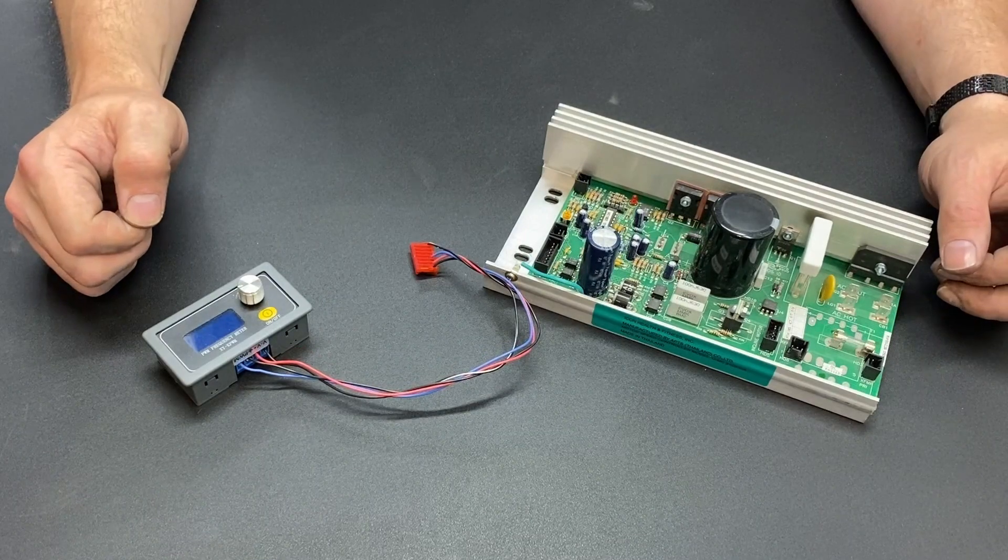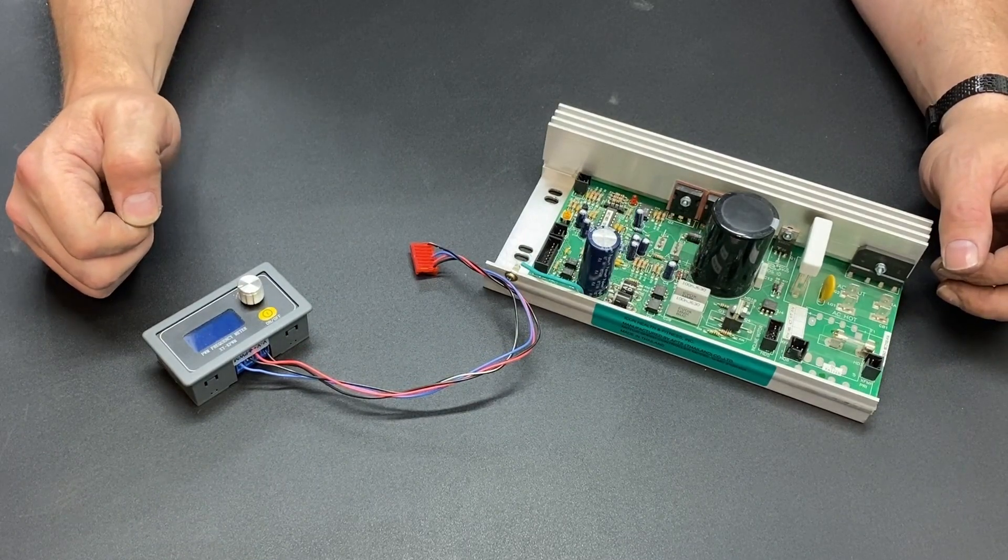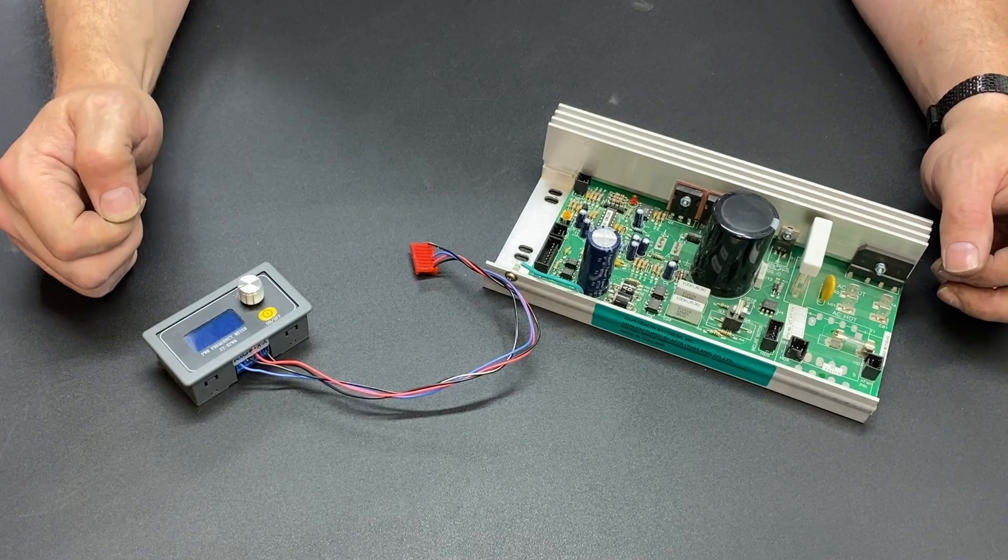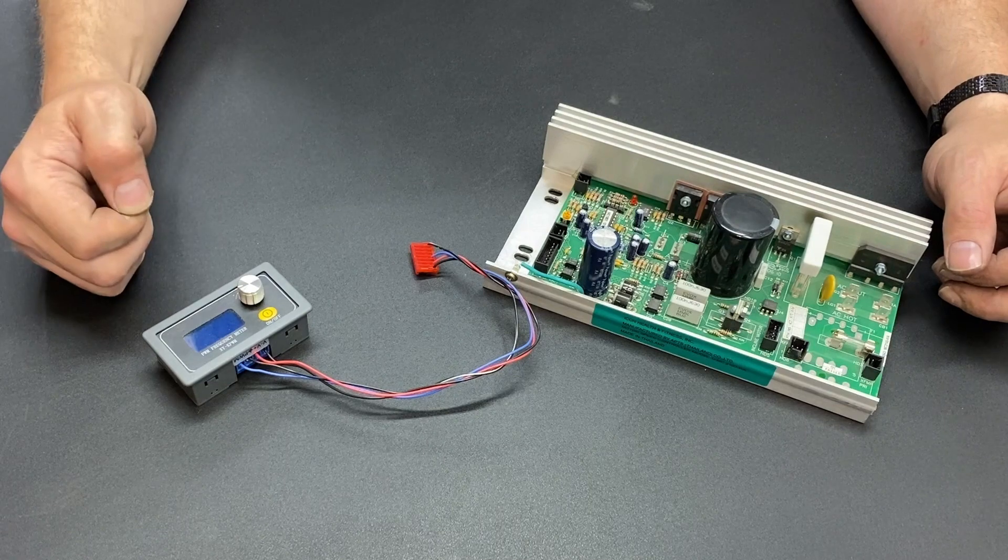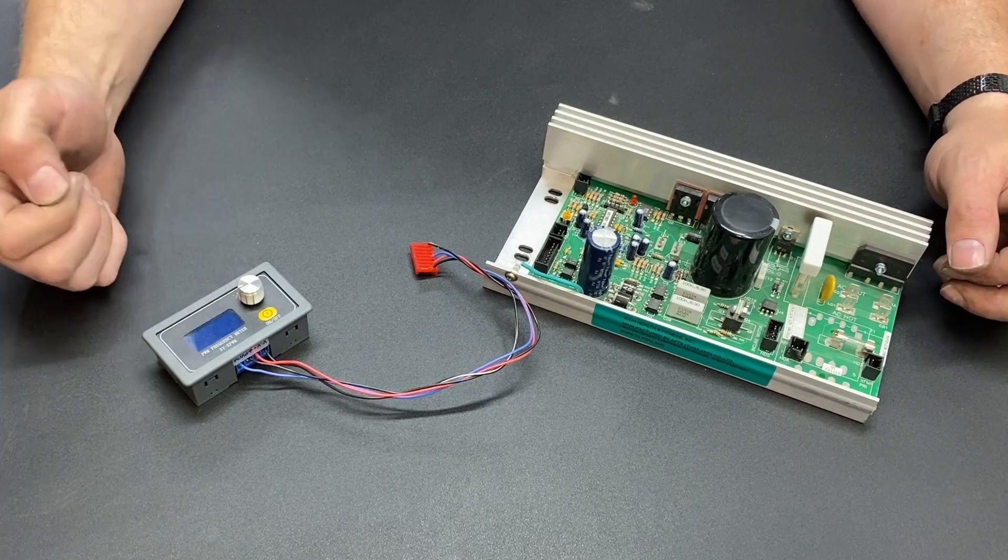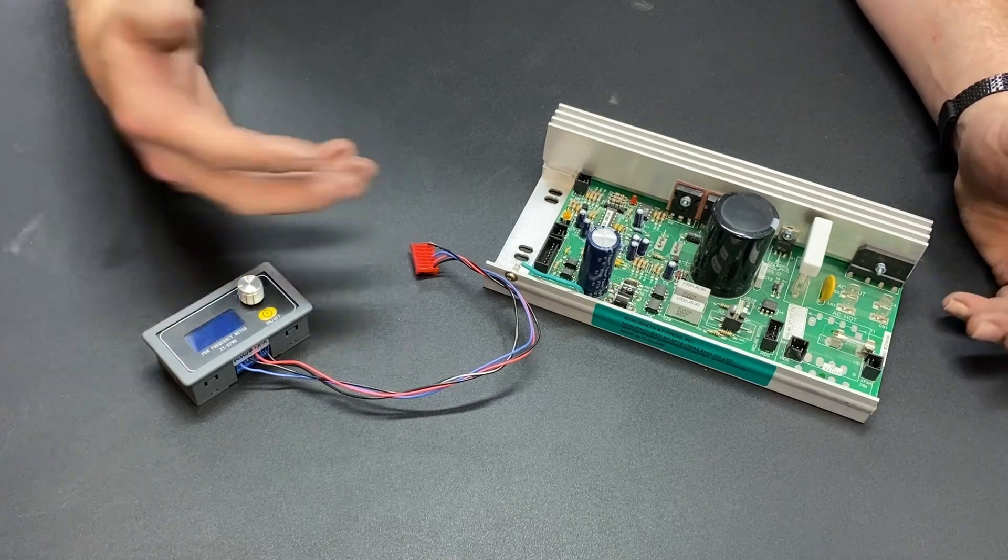A Pulse Width modulator is something that sends an electrical signal in a pulsing nature that is specific. So it may pulse one time a second, it may pulse a hundred times a second, it may pulse a thousand times a second, and anywhere in between.